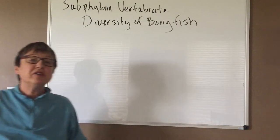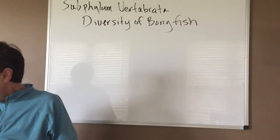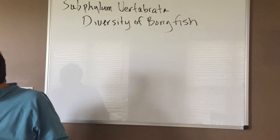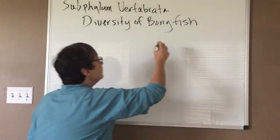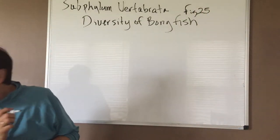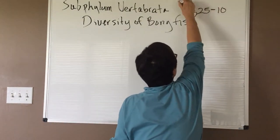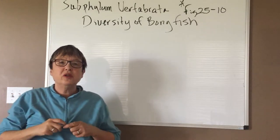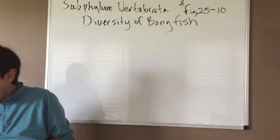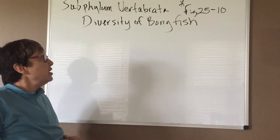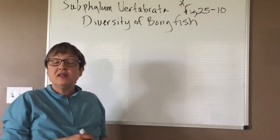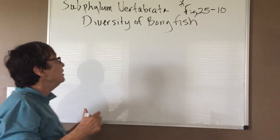I talked about some general characteristics. I also like to point out the figure on page 549 — figure 25-10 — of the internal anatomy of the fish. I do want you to be able to identify all of those structures that are there. We're talking about general characteristics of the bony fish, and what I'd like to do now is talk about some of the groups that are included in the bony fish.